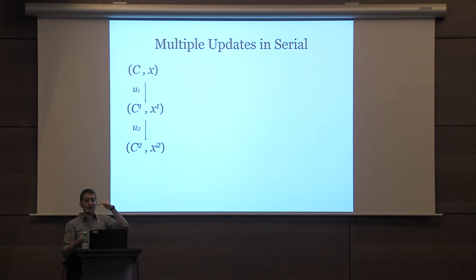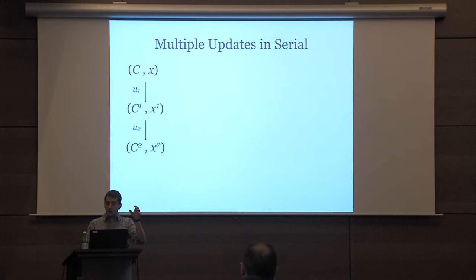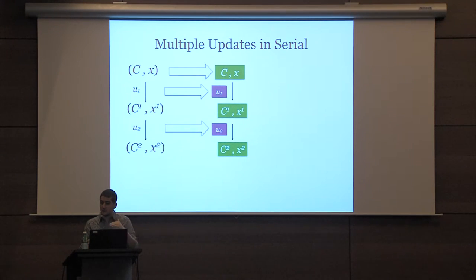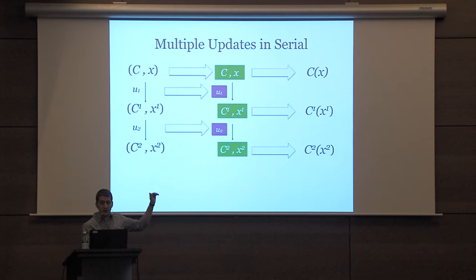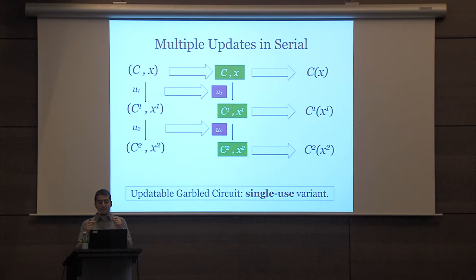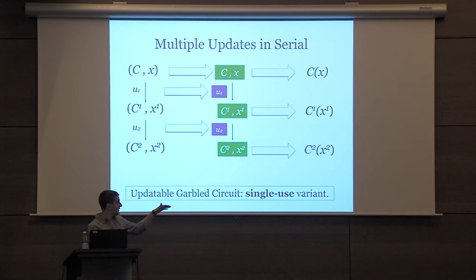It's easy to see why multiple updates make sense. We think about multiple updates in serial: if I have C and x, I apply update U1 to get Cx1, and then update U2. I want to be able to do that in the encoding world too — I can give you the randomized encoding of C and x, then the encoding of the first update, then the encoding of the second update, and you should be able to do the desired computation. Each green box is a randomized encoding, so you can decode each one and get C of x, C1 of x1, and so on. Updatable garbled circuits correspond to a single-use variant where you can only decode the last value.